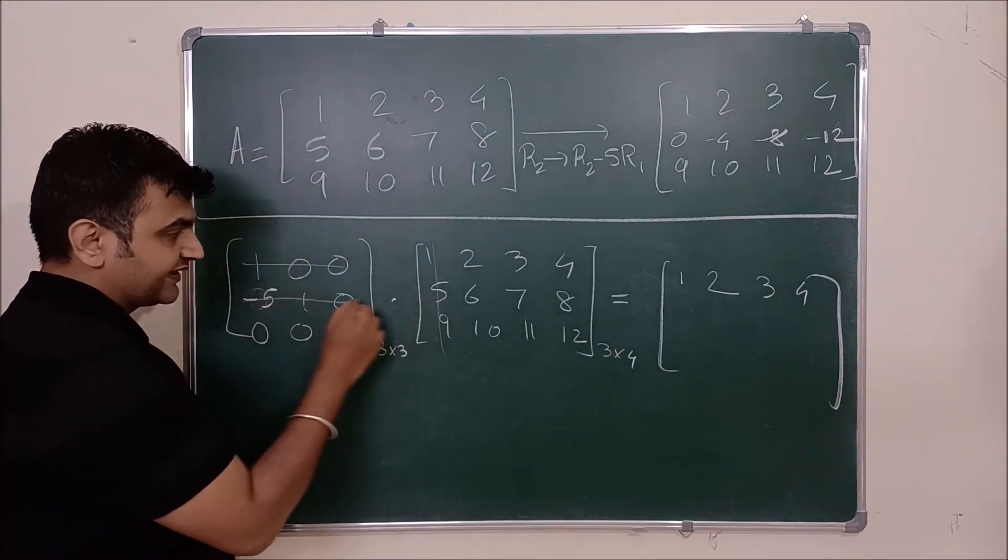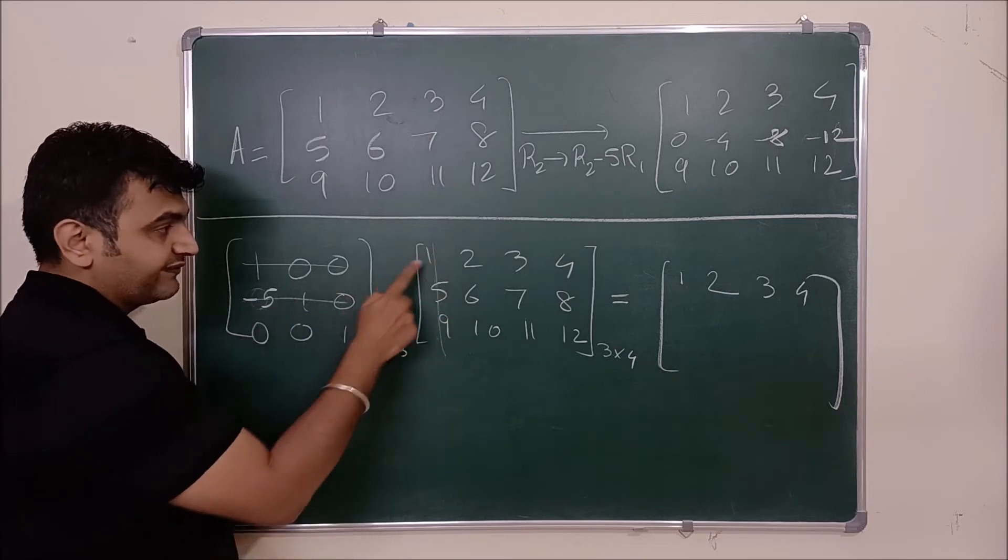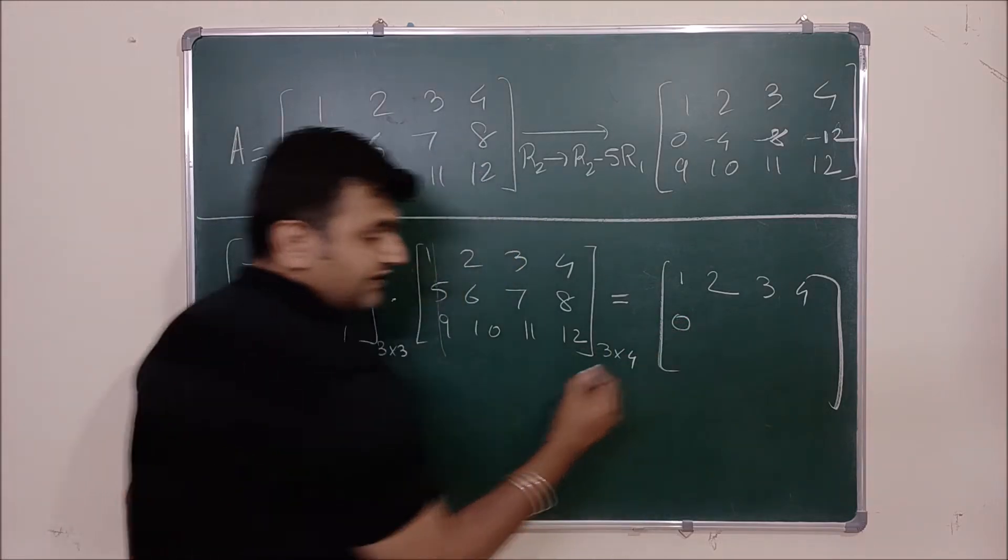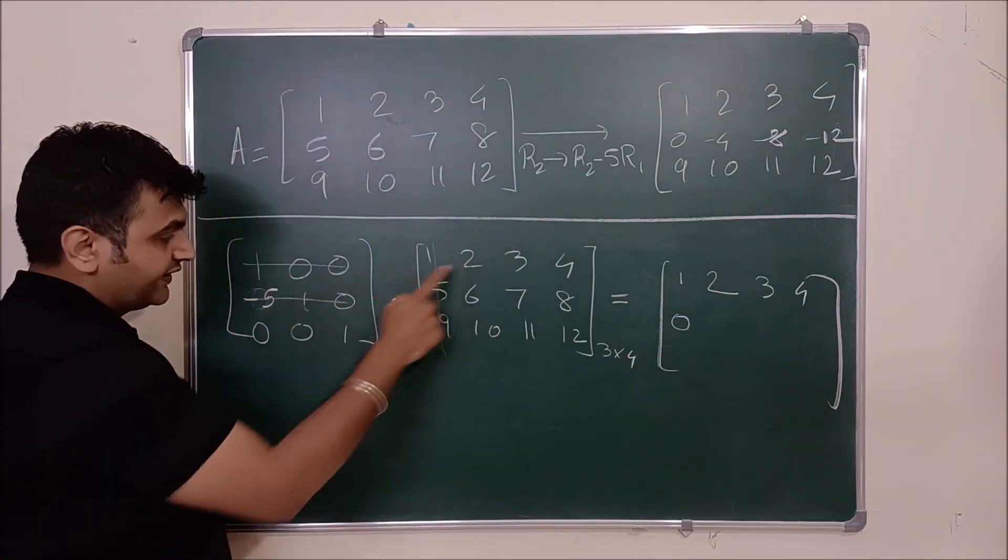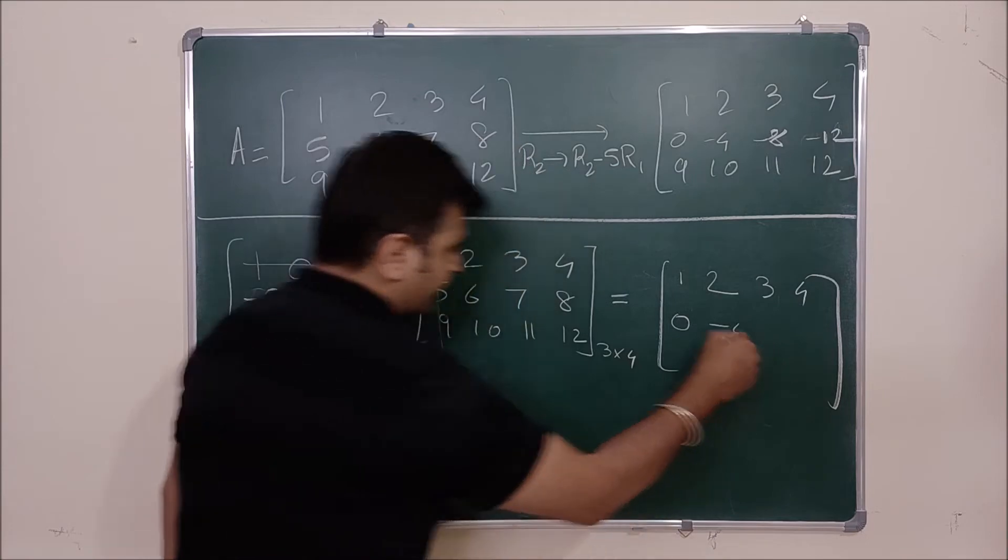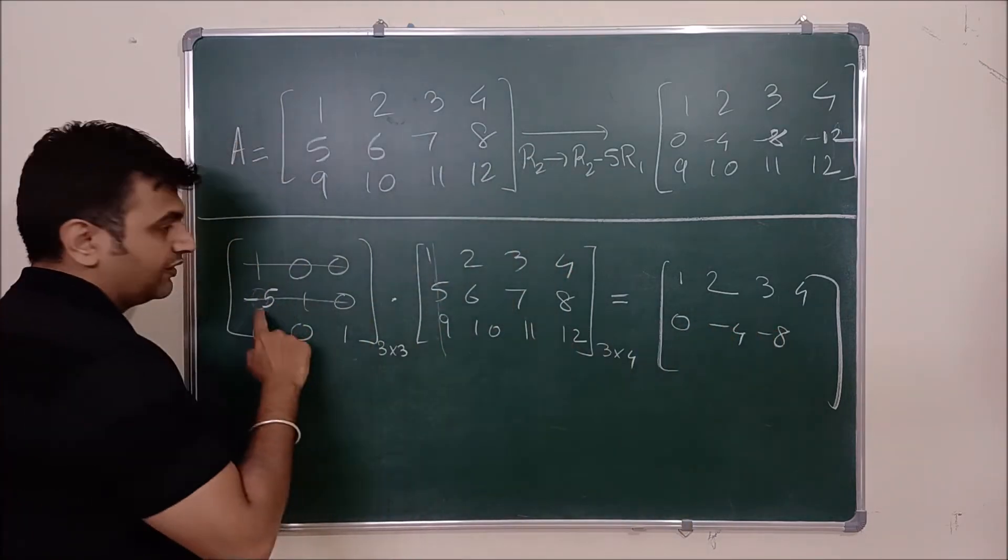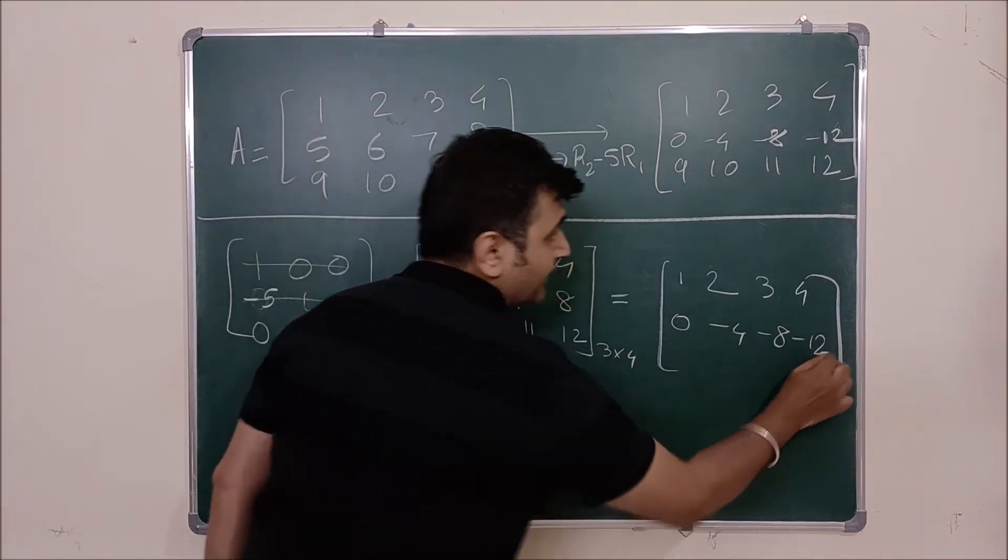Let's go for the second entry. Second row, first column. Minus 5 into 1 is minus 5 plus 1, 1 into 5 plus 0. So this is 0. Minus 10 plus 6 minus 4. Minus 15 plus 7 minus 8. Minus 20 plus 8 minus 12.